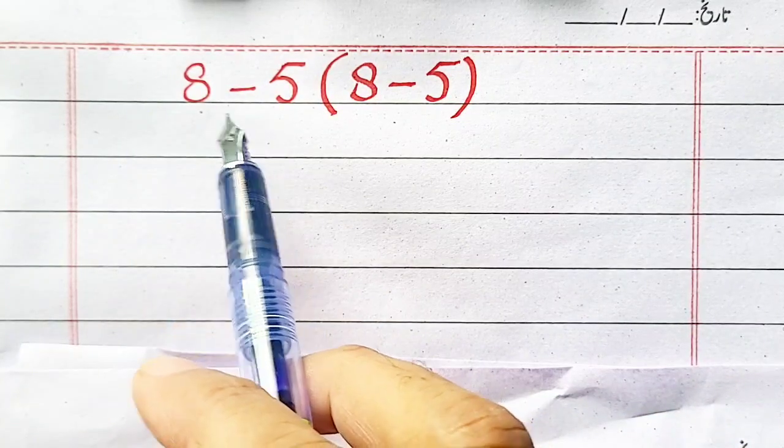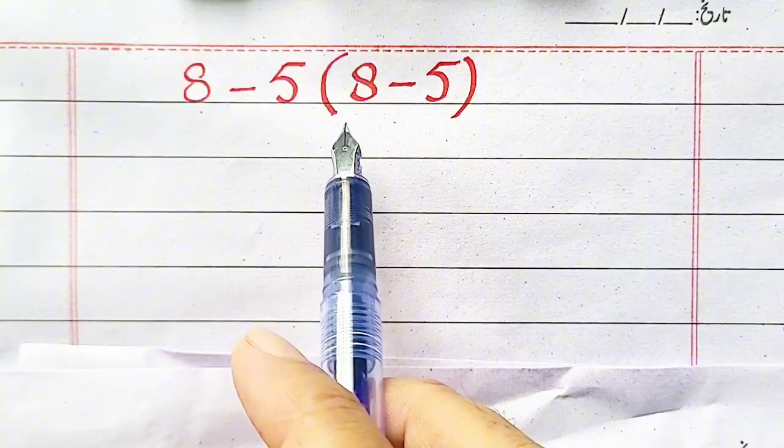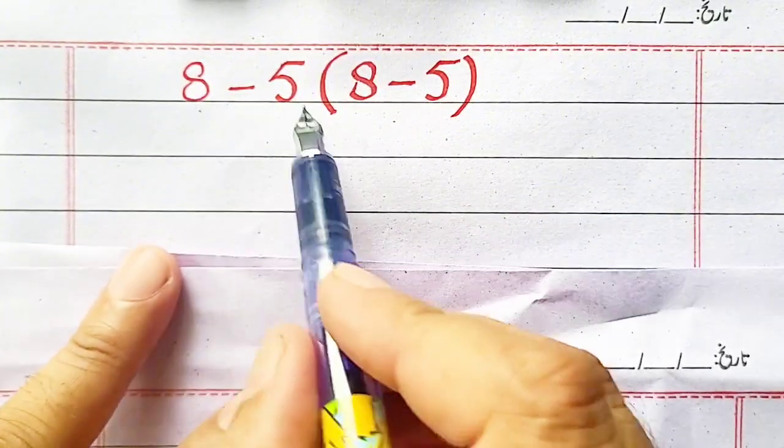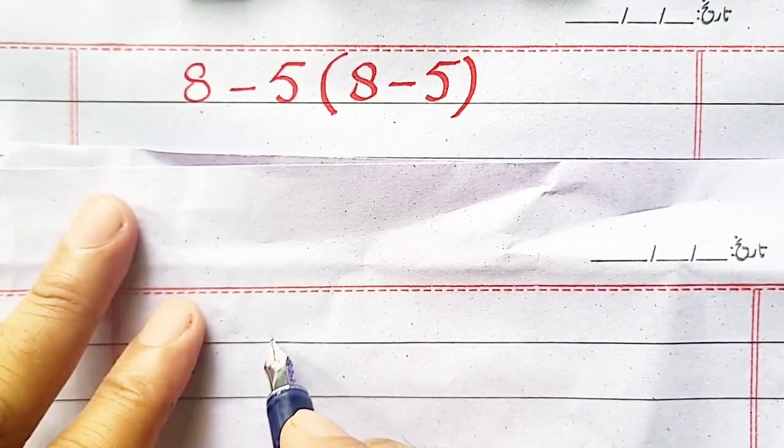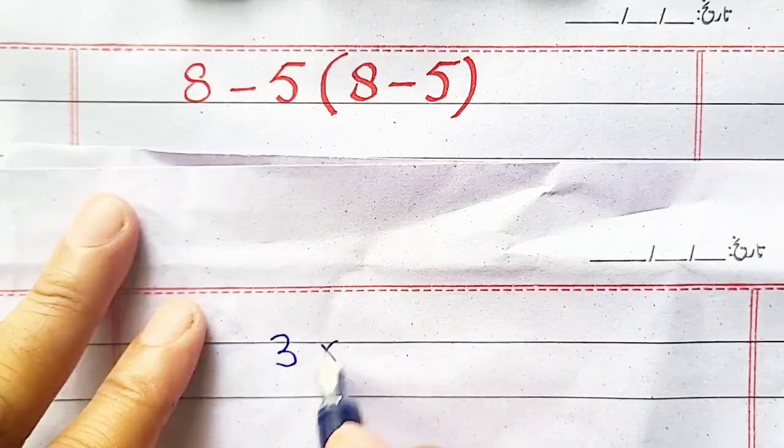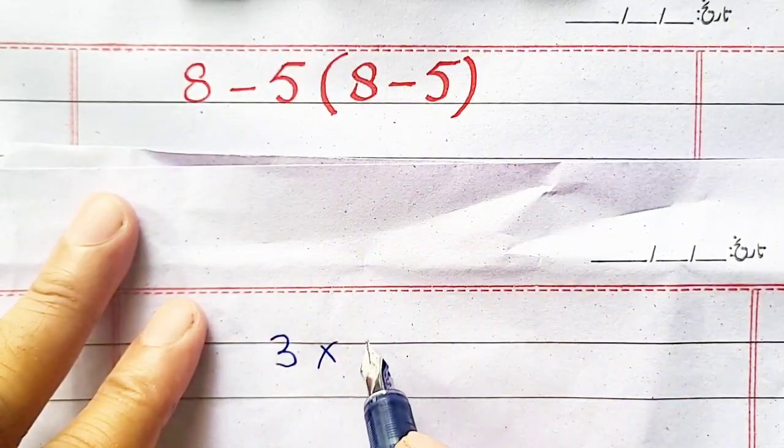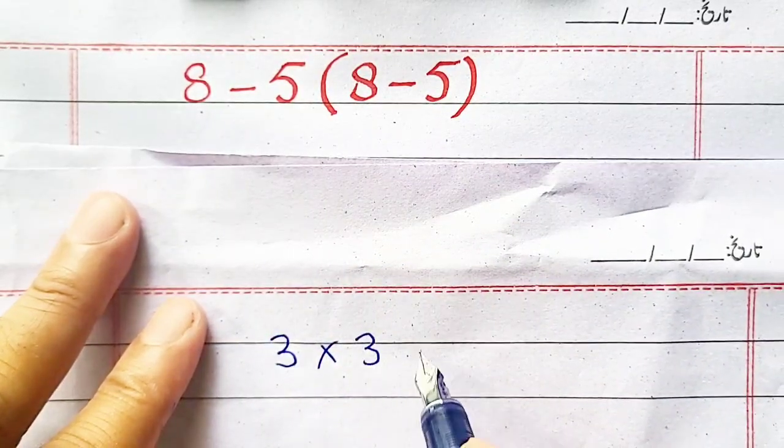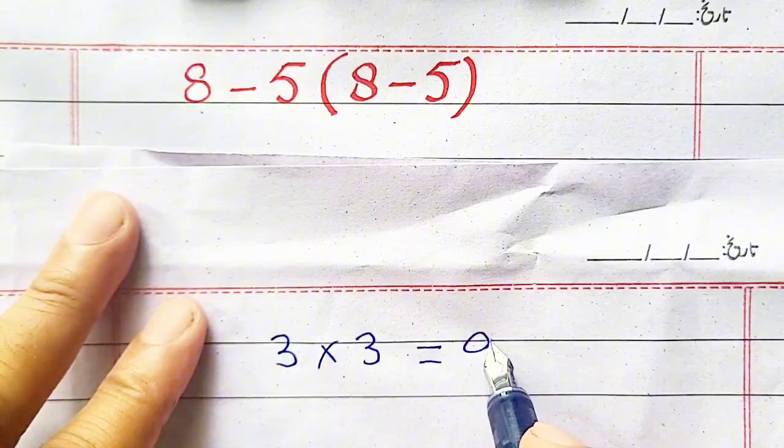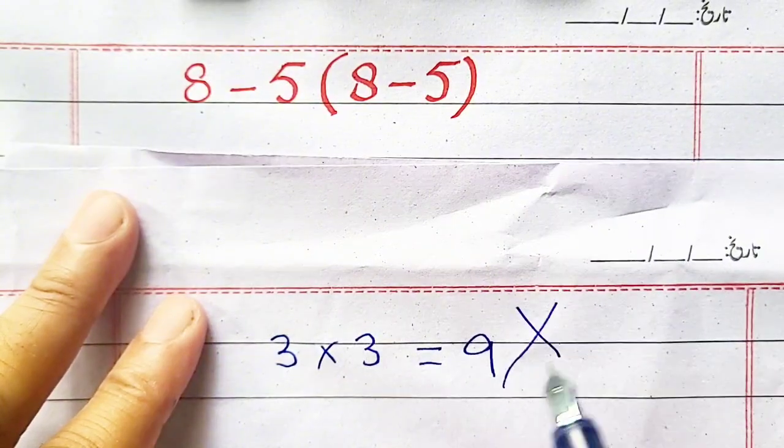You are thinking that its answer is 9: 8 minus 5 equals 3, and 8 minus 5 equals 3, so 3 multiplied by 3 equals 9. But it's wrong.